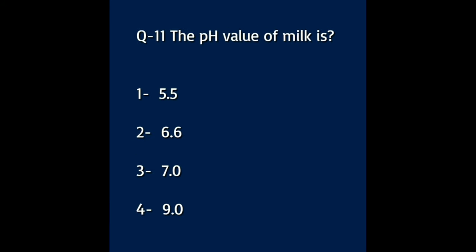Question number eleven: the pH value of milk is — Option A: 5.5. Option B: 6.6. Option C: 7. Option D: 9. The answer to this question is Option B, which is 6.6.